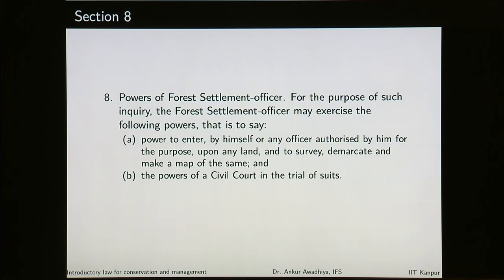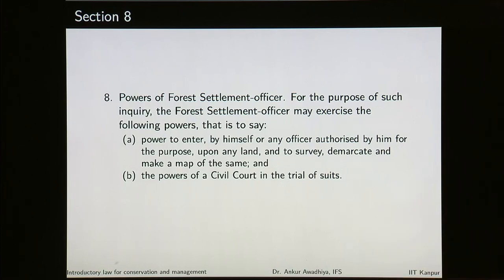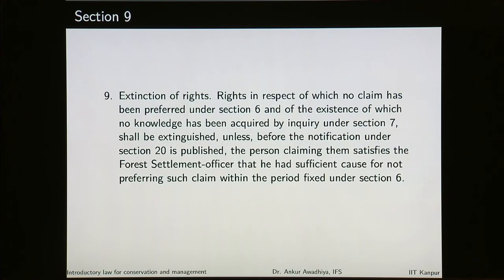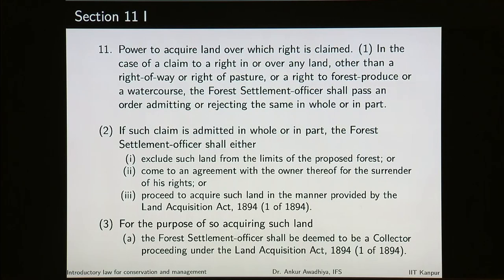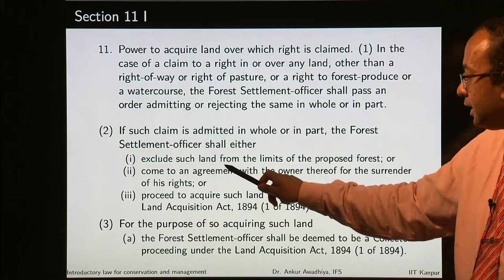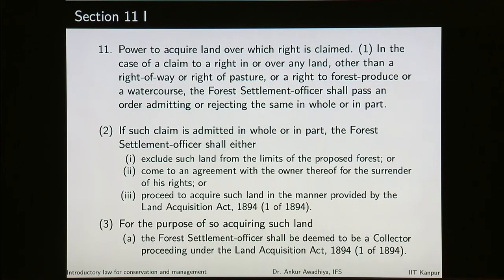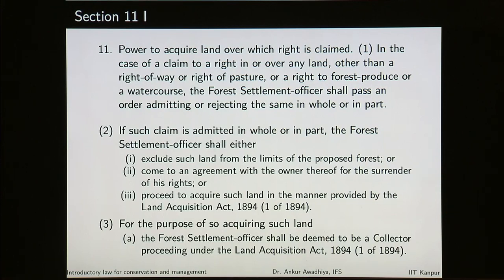The forest settlement officer has powers of entry upon any land, survey, demarcate, make a map, and the powers of a civil court in the trial of suits. Then it talks about the extinction of rights — if people have not put up their claims, those rights can be made extinct. There is also treatment of claims relating to the practice of shifting cultivation, and power to acquire land over which rights are claimed. The forest settlement officer can do three things: if the claim is admitted in whole or in part, he can exclude that land from the limits of the proposed forest, or he may come to an agreement with the owner for the surrender of his rights, or he may proceed to acquire such land under the Land Acquisition Act of 1894.